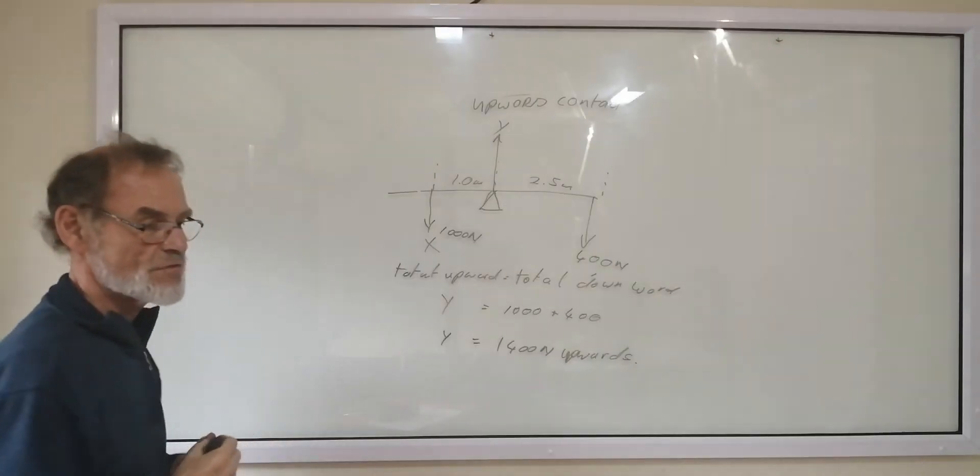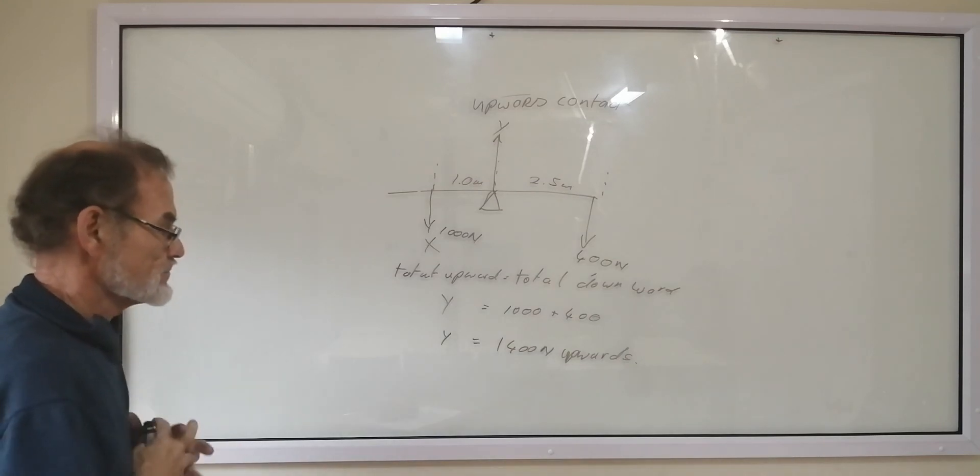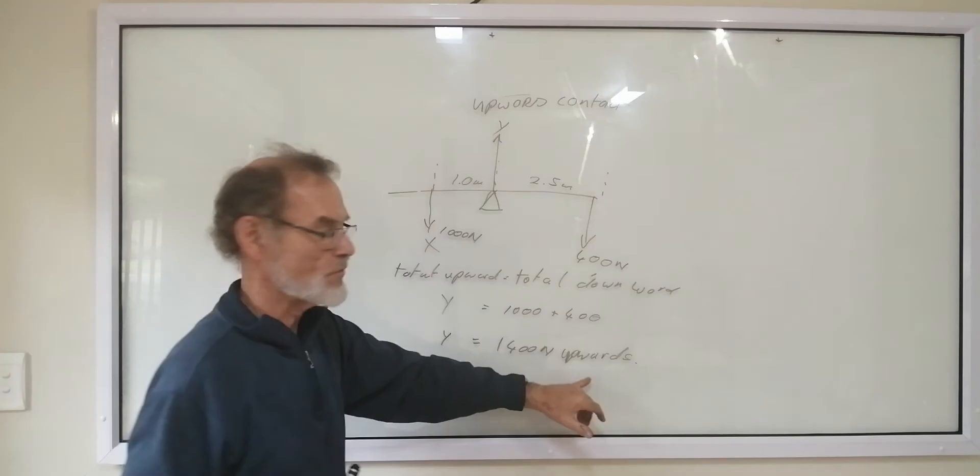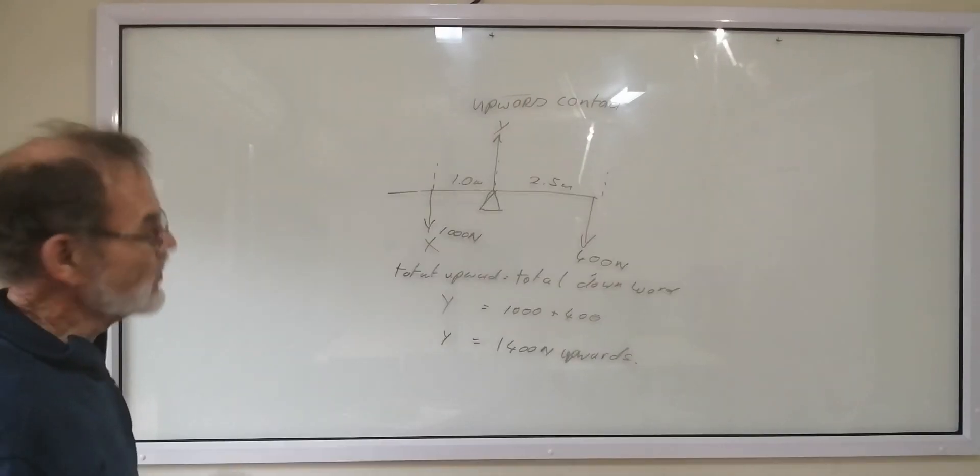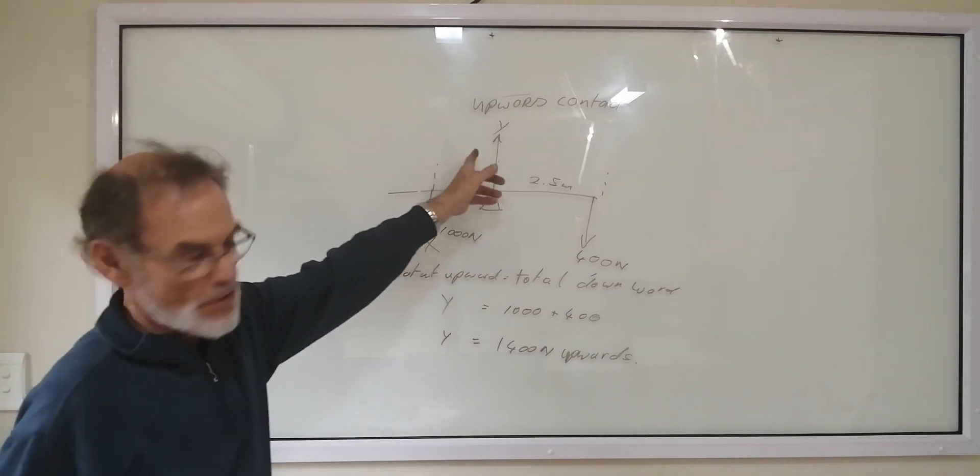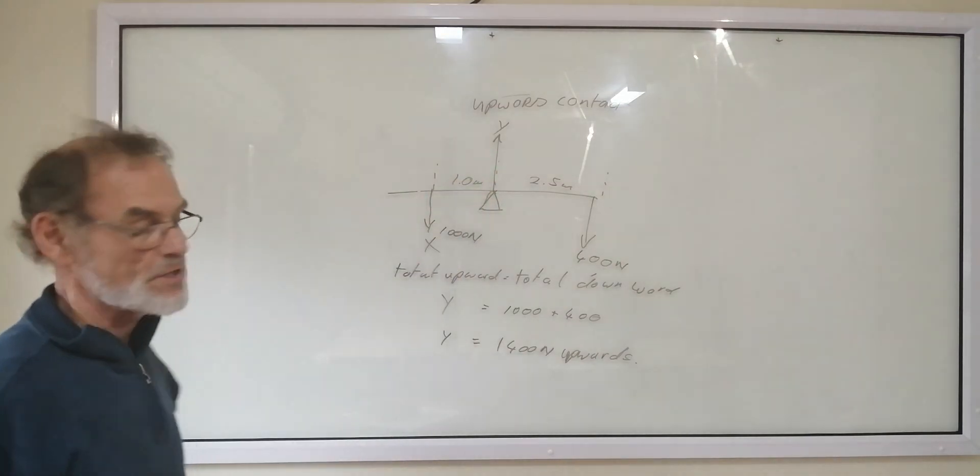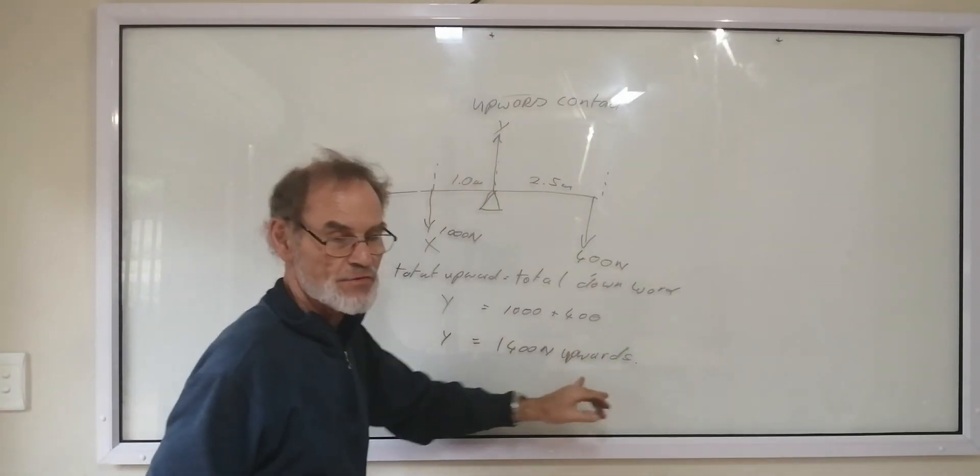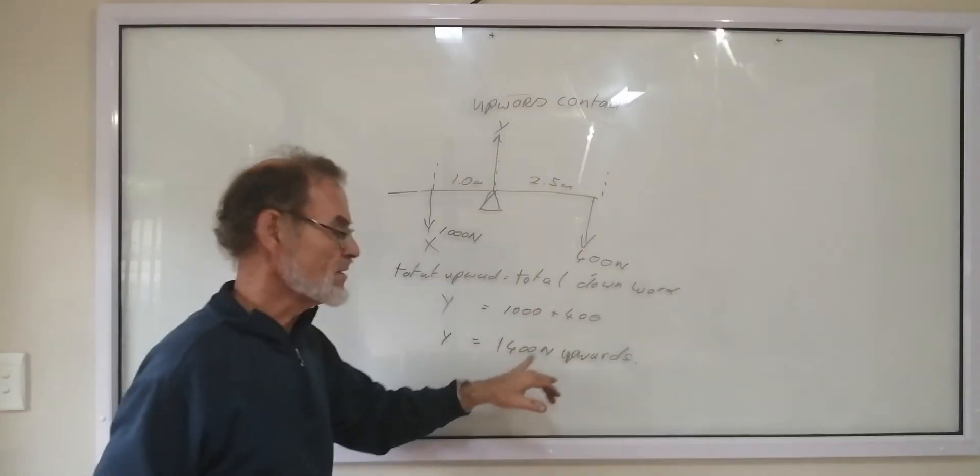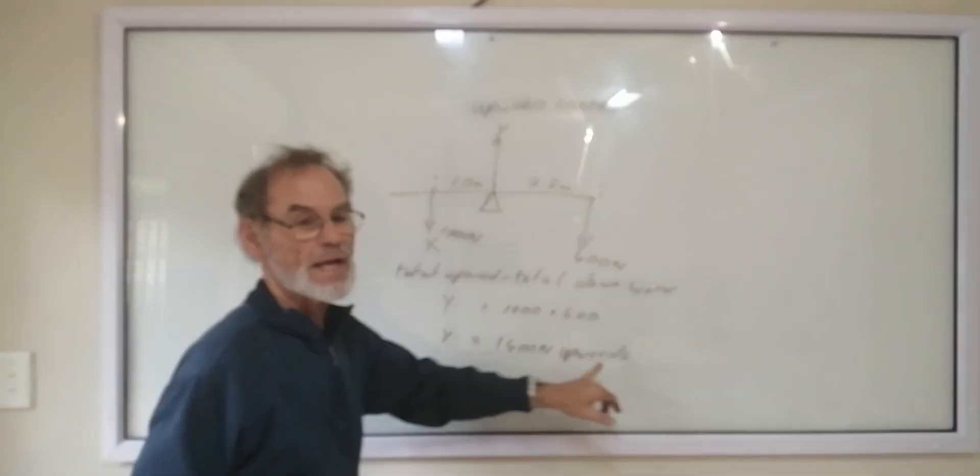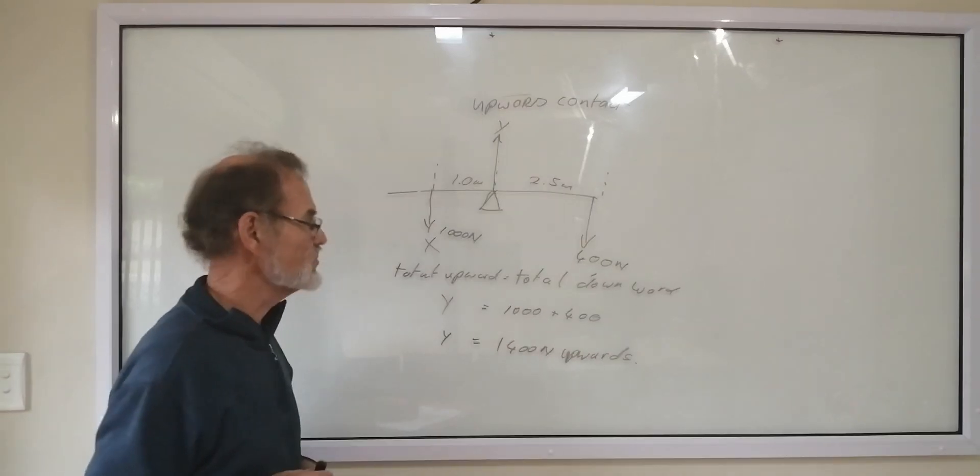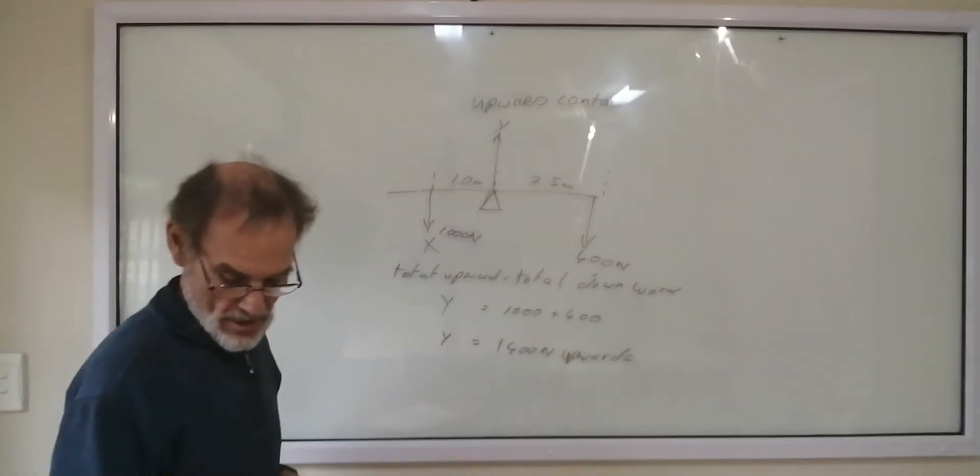So that's why Y is then equal to 1400 newtons upwards. Remember, the force is a vector. And it's always got a direction. And you must specify the direction of your force. We know that it's going upwards because it's like that on the diagram. But you will lose marks if you don't write a vector with a magnitude and a direction. All vectors and forces are vectors. All forces have magnitude and direction. You will lose marks.